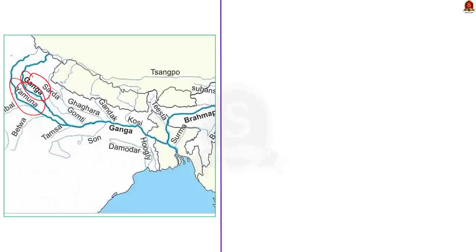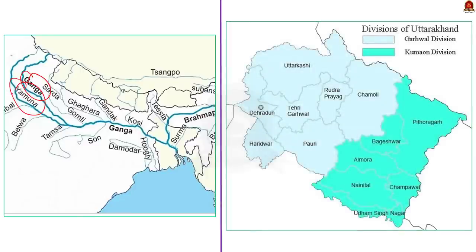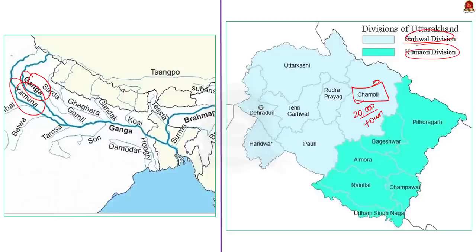Uttarakhand as a state is divided into two administrative units. The north-western part is called Garhwal and the south-eastern part is called Kumaon. Joshimath is located in the Chamoli district, which is located in the Garhwal division of Uttarakhand. The population of the town has been estimated to be something around 20,000. Even though the population is quite low, due to its strategic location and tourism potential, a huge number of hotels have sprung up all over the town.